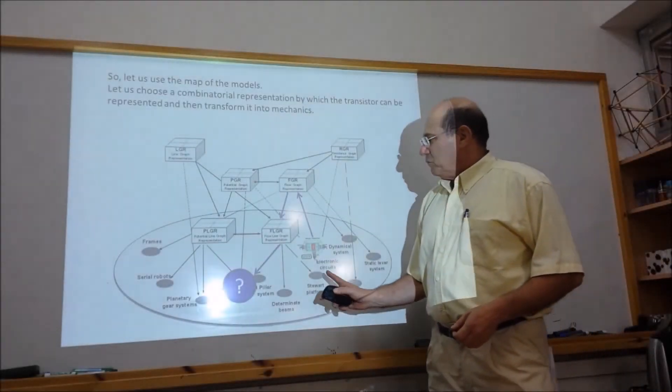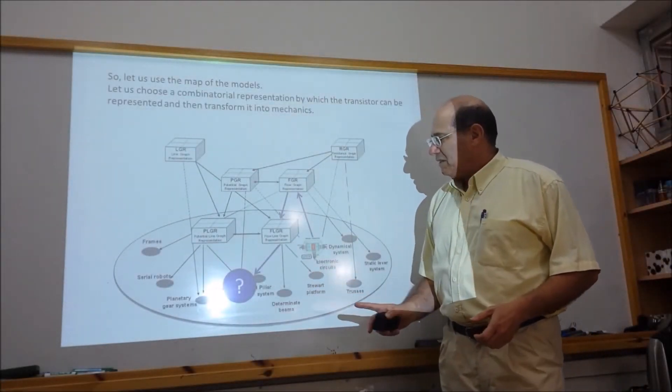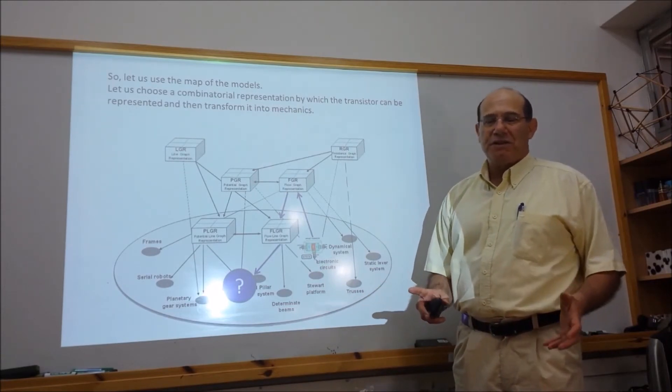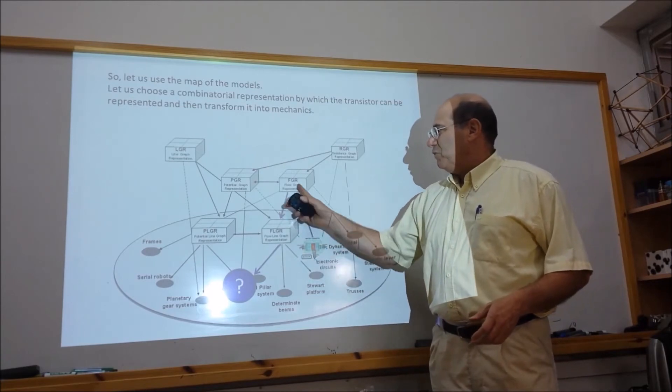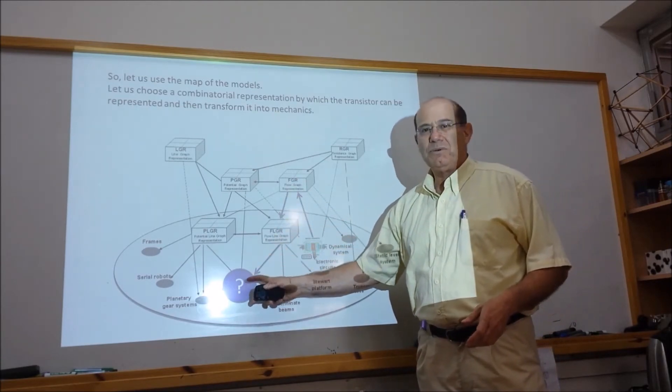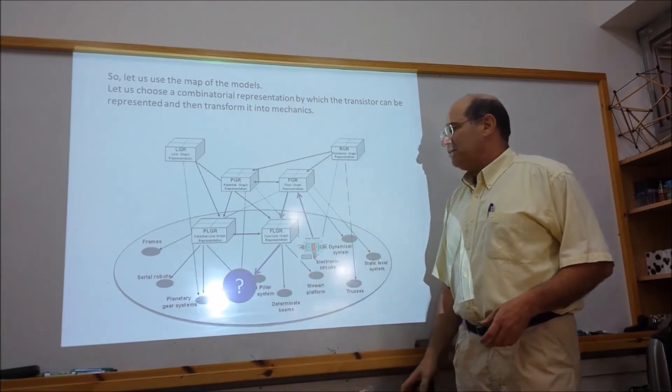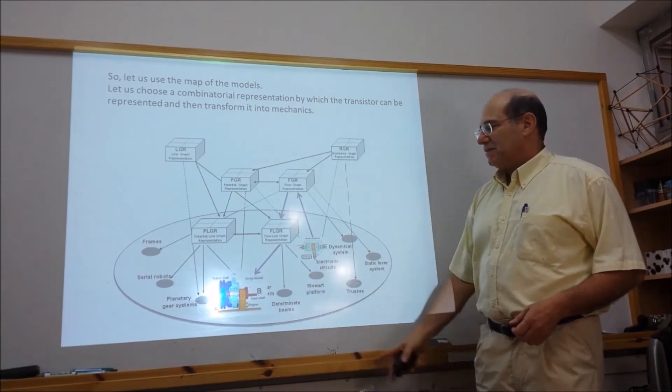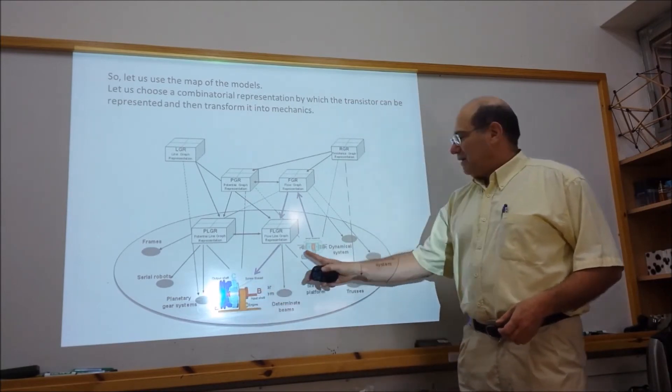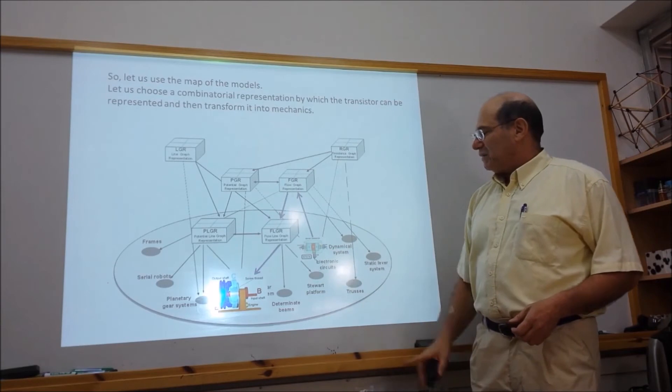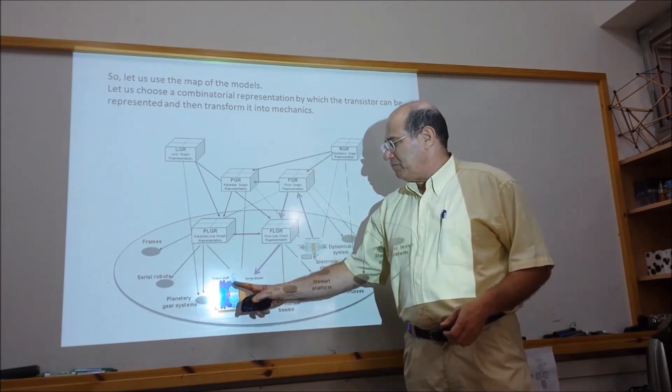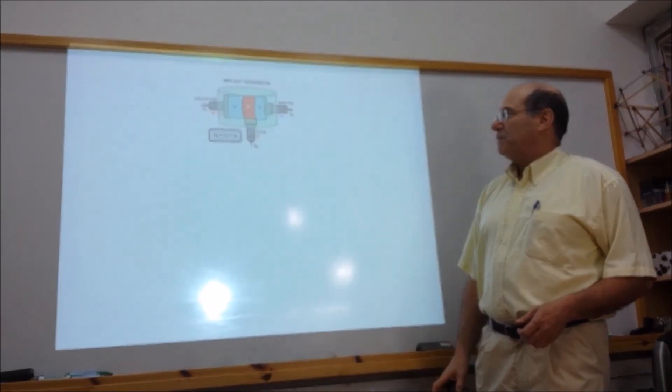So we are now ready to see what came out from the transformation. We have the transistor. We moved it up through the representation, and now we can see this is a mechanical transistor. We are happy to introduce it. This is equivalent to the electronic transistor, and we can see that it has the same topology and the same behavior.